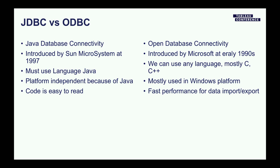Let me give a brief background on what is ODBC and JDBC and the difference between them. JDBC is short for Java Database Connectivity, introduced by Sun Microsystems in 1997. It must use the programming language Java, and it is platform-independent because of the nature of Java. The API code is easy to read and write. ODBC is short for Open Database Connectivity, introduced by Microsoft in the early 1990s. It can use any language, but mostly C or C++, and is mostly used on Windows. It has the benefit of fast performance for large data import or export. In short, Tableau uses C++ to connect to ODBC connections, but we need to switch to Java to connect to JDBC connections.